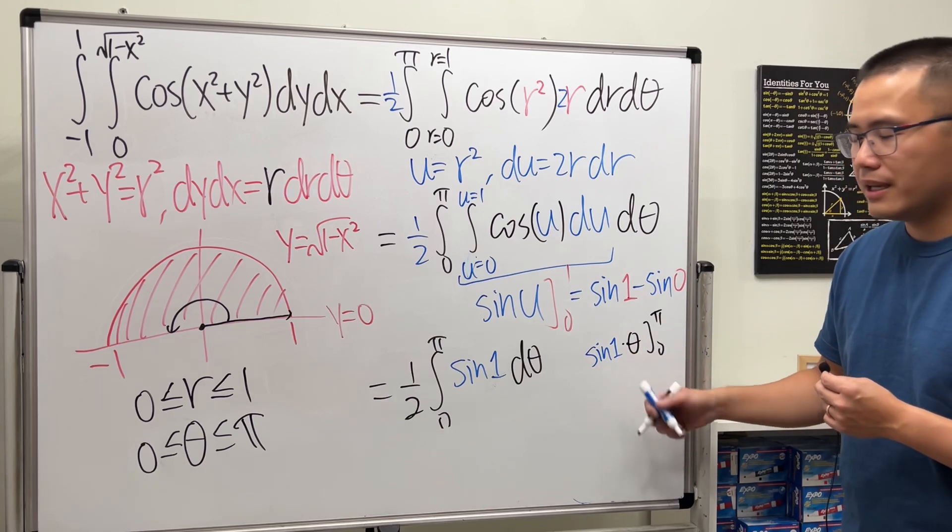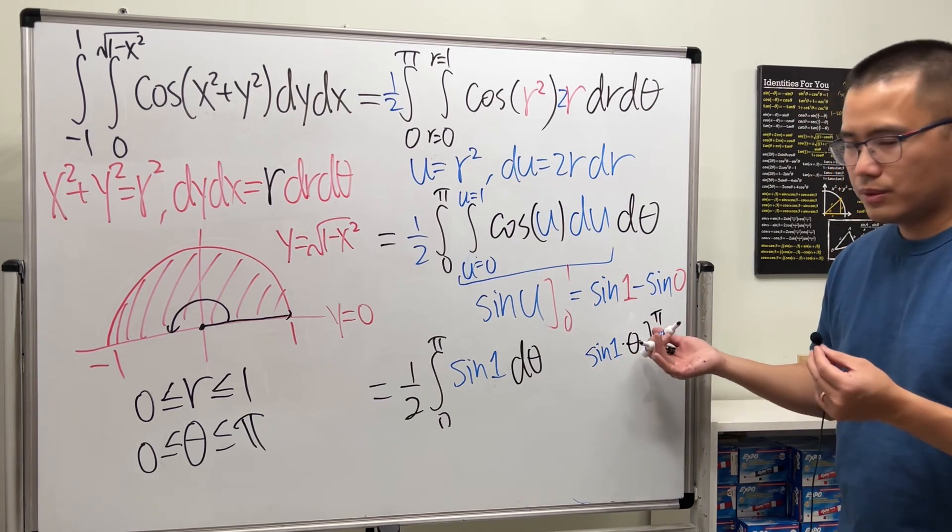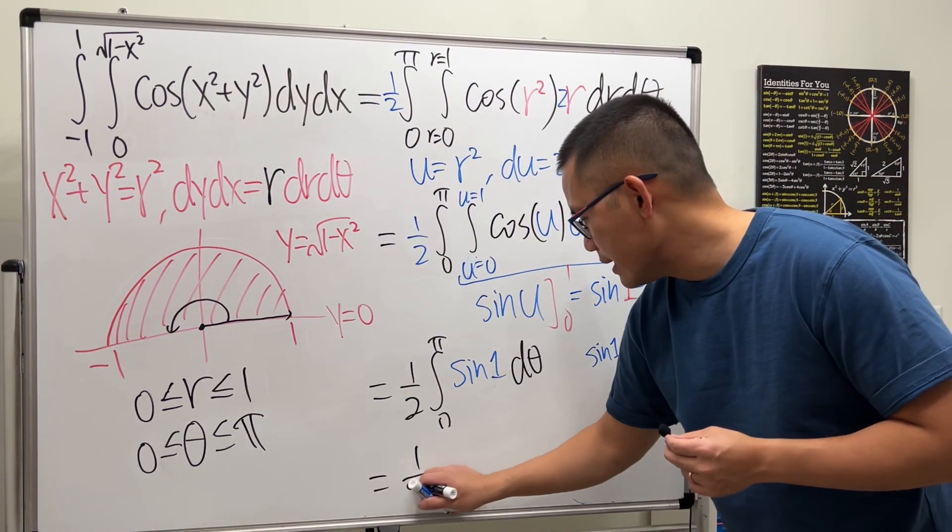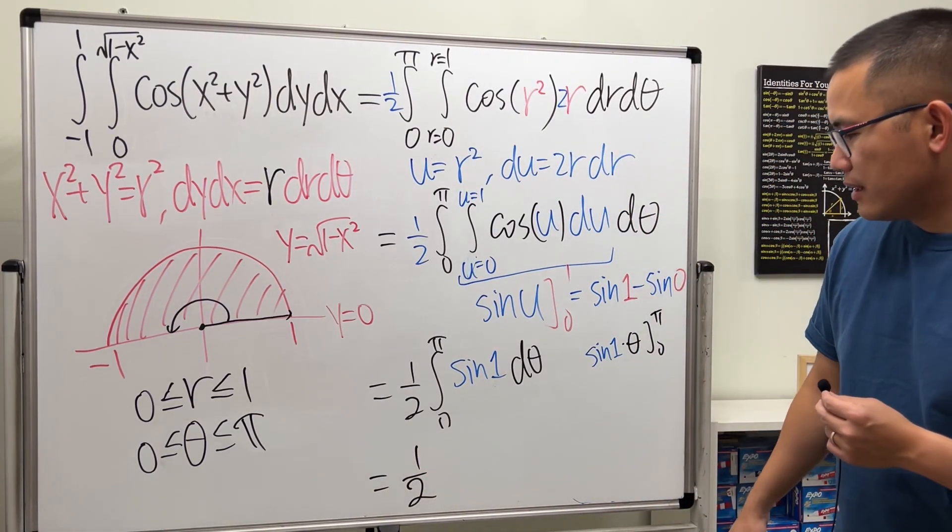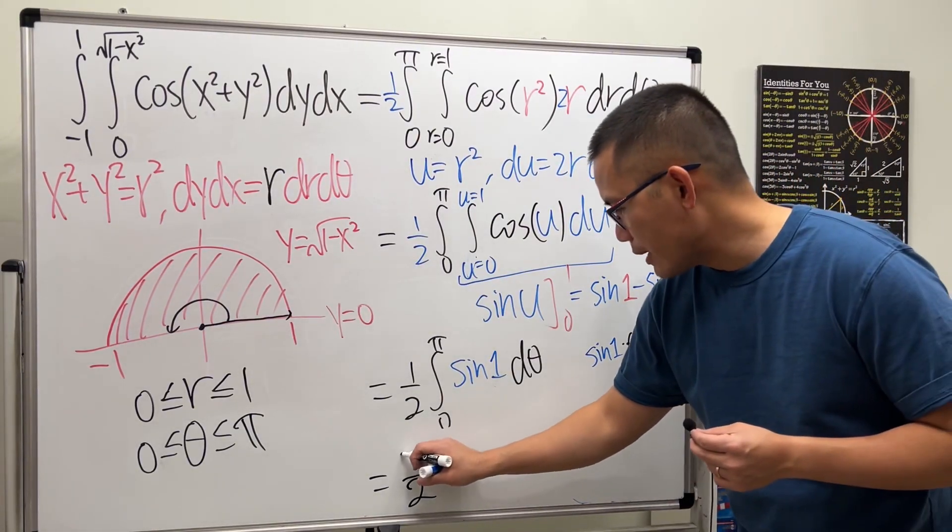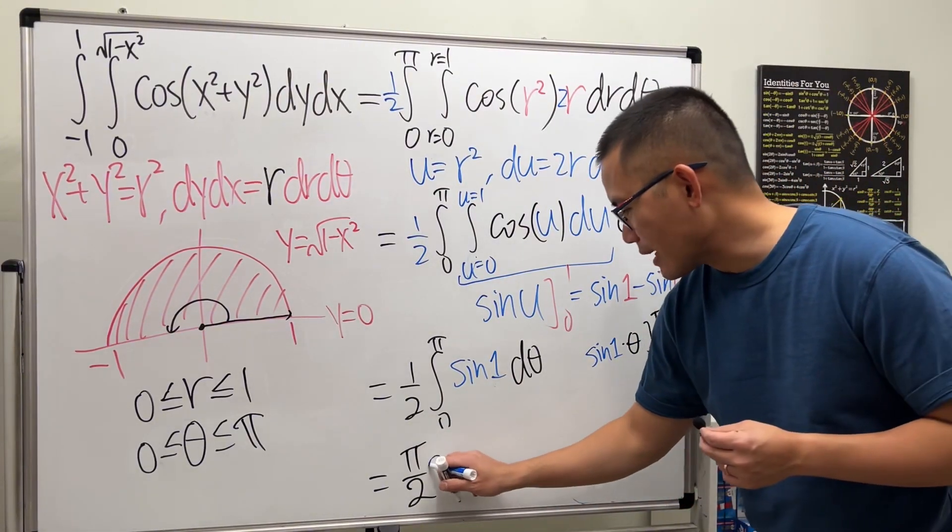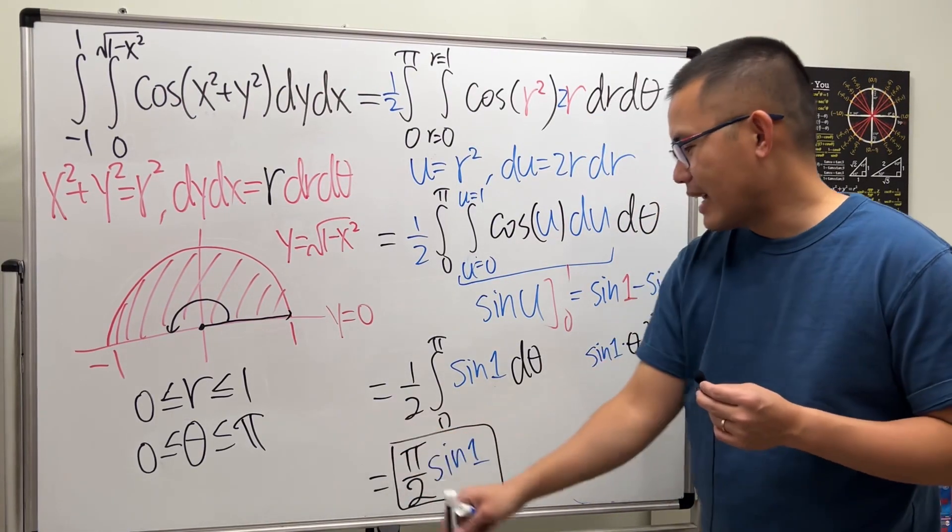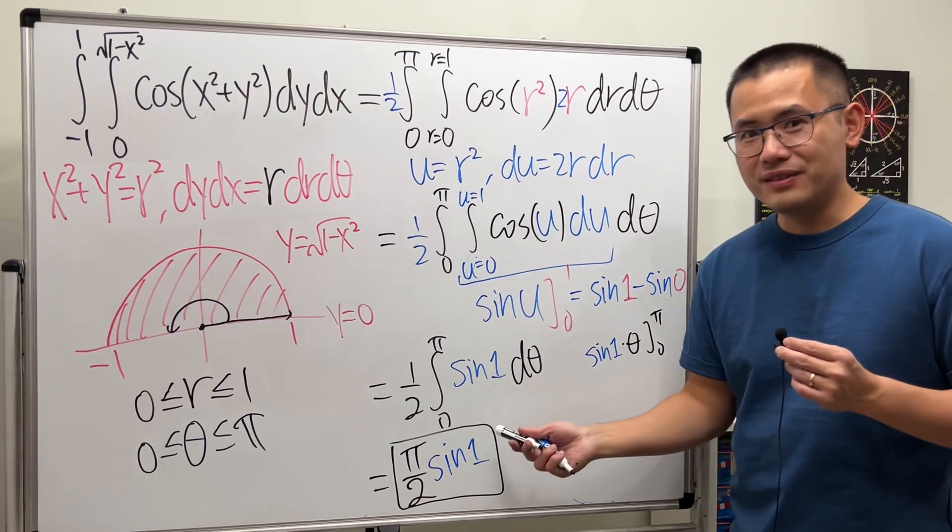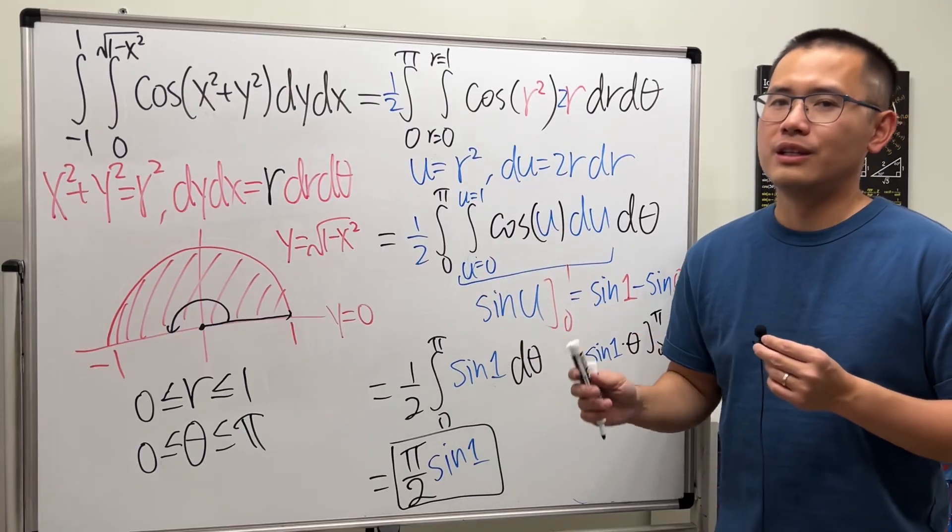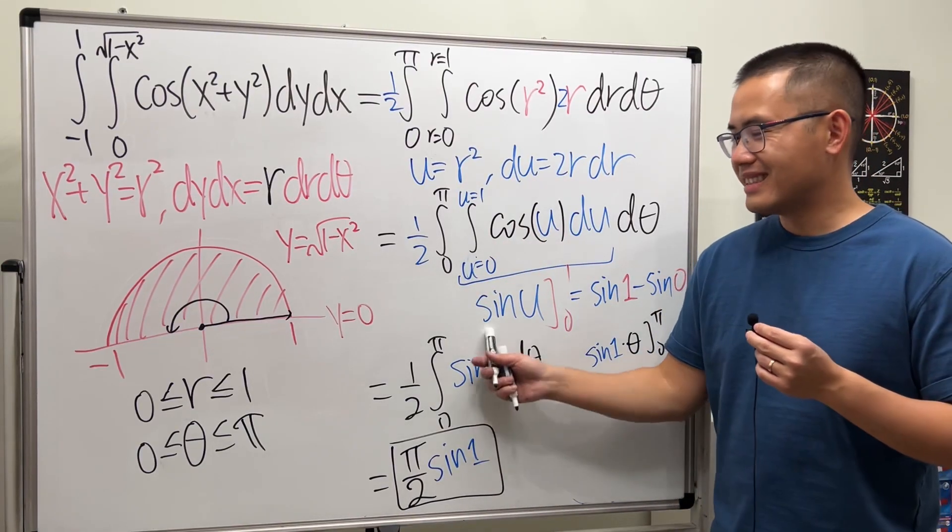So all in all, we will have one-half, and I will just write, because of the π, I'll put a π right here, times the sine 1. And that will do it. Hopefully this video helps. If you want to see more examples with double integrals, check that link in the description. That's it.